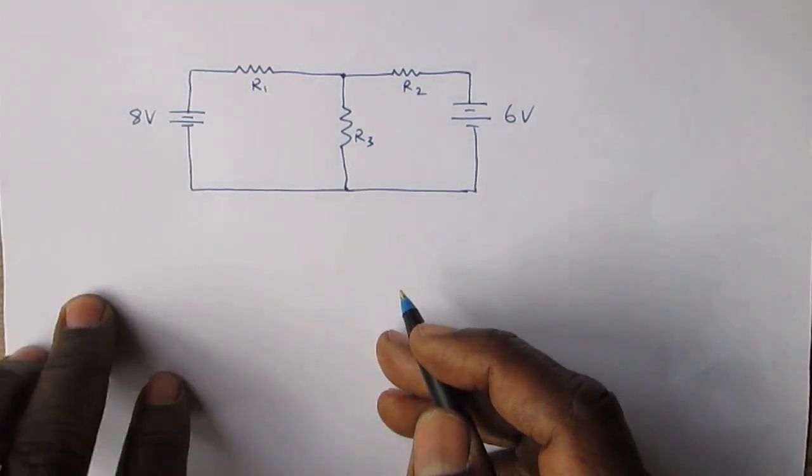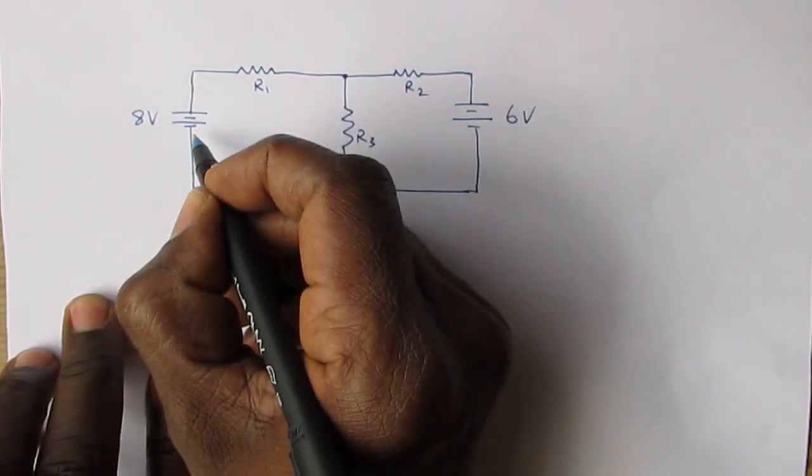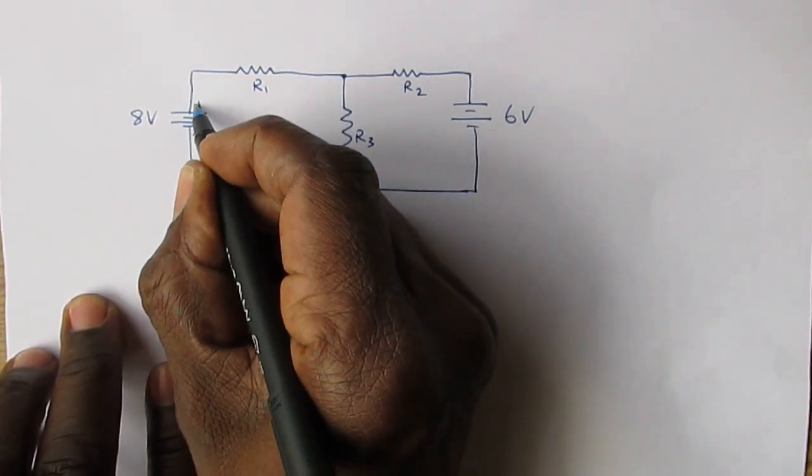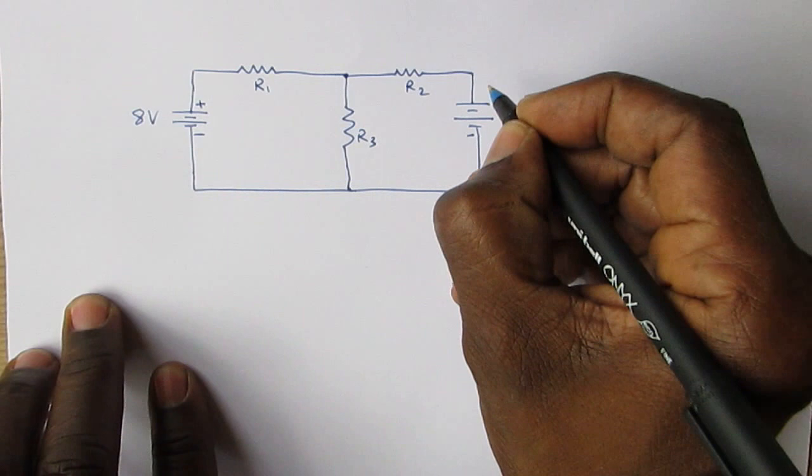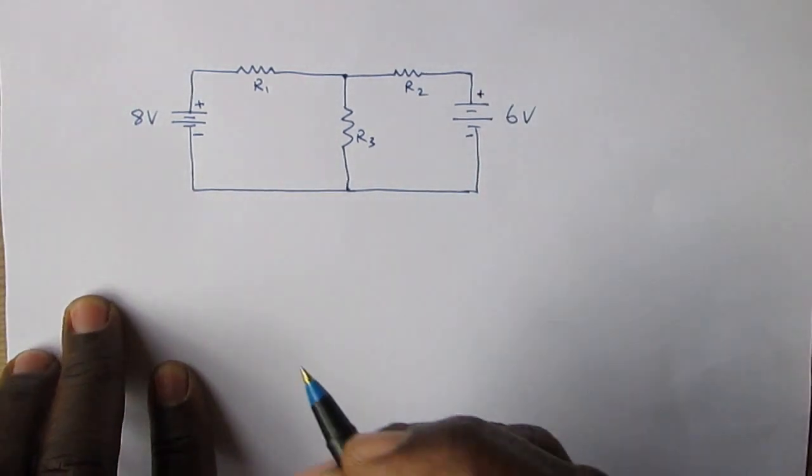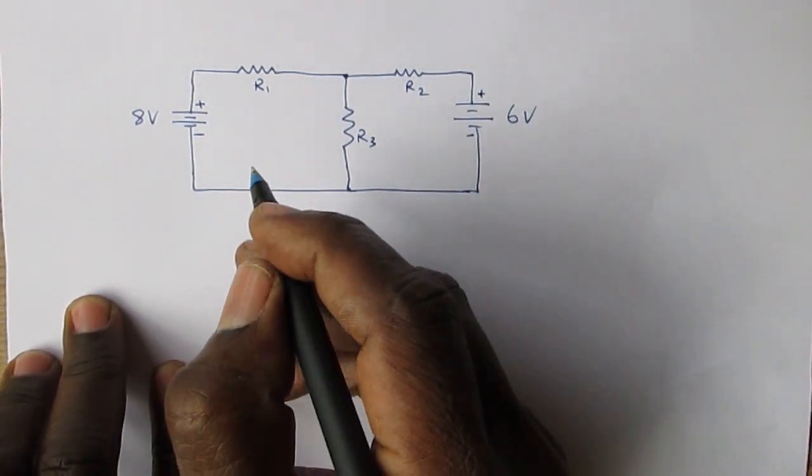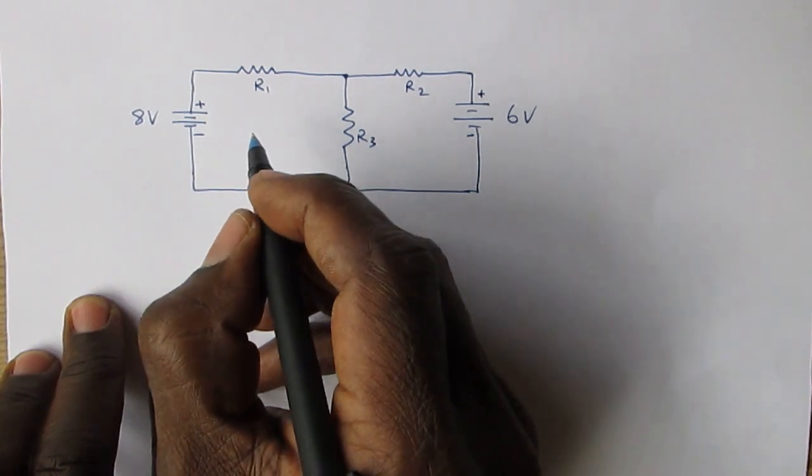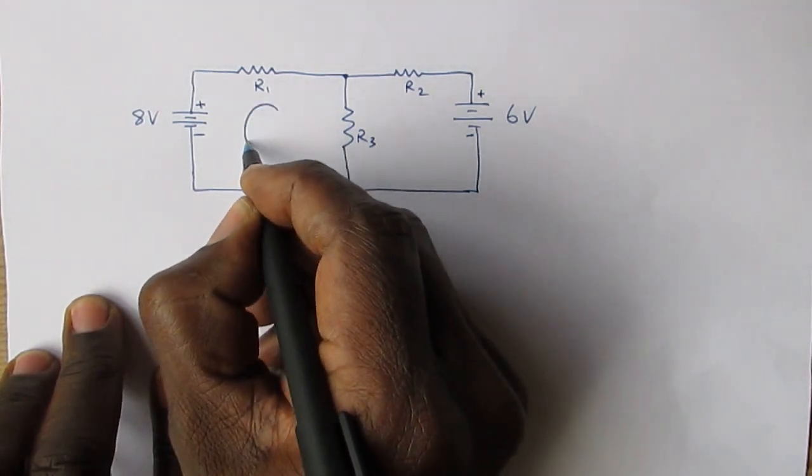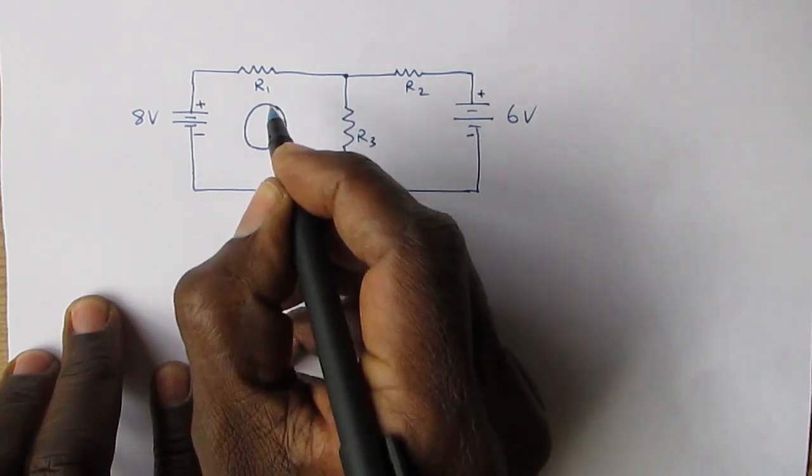First, we need to put a polarity on the batteries. Next, we need to indicate the current on the left-hand side, I1. We are using the mesh method of circuit analysis.